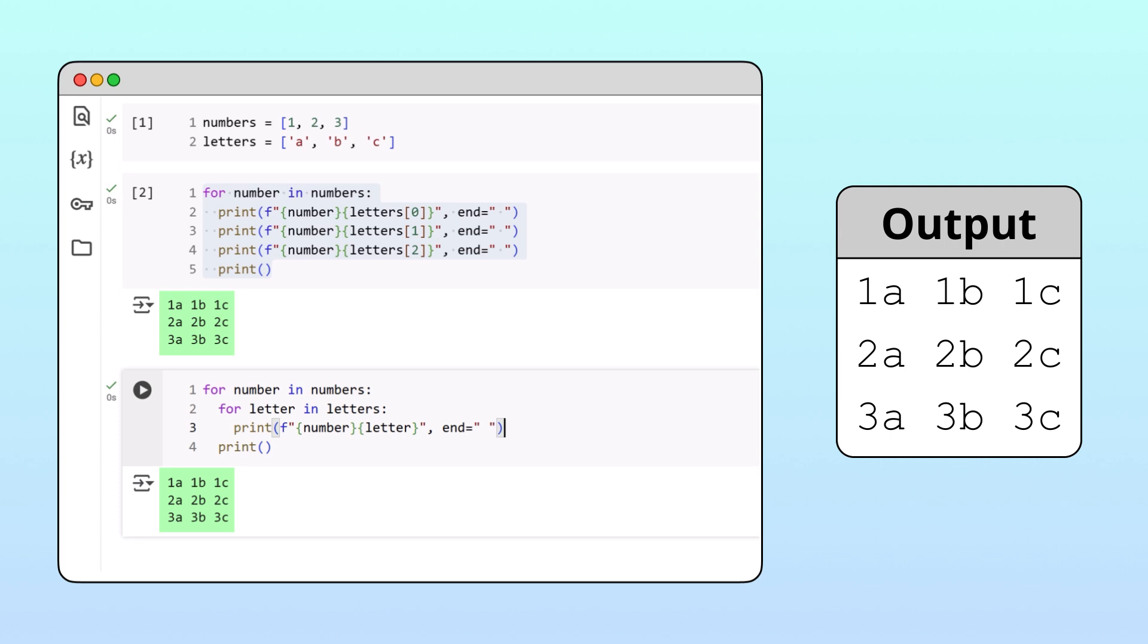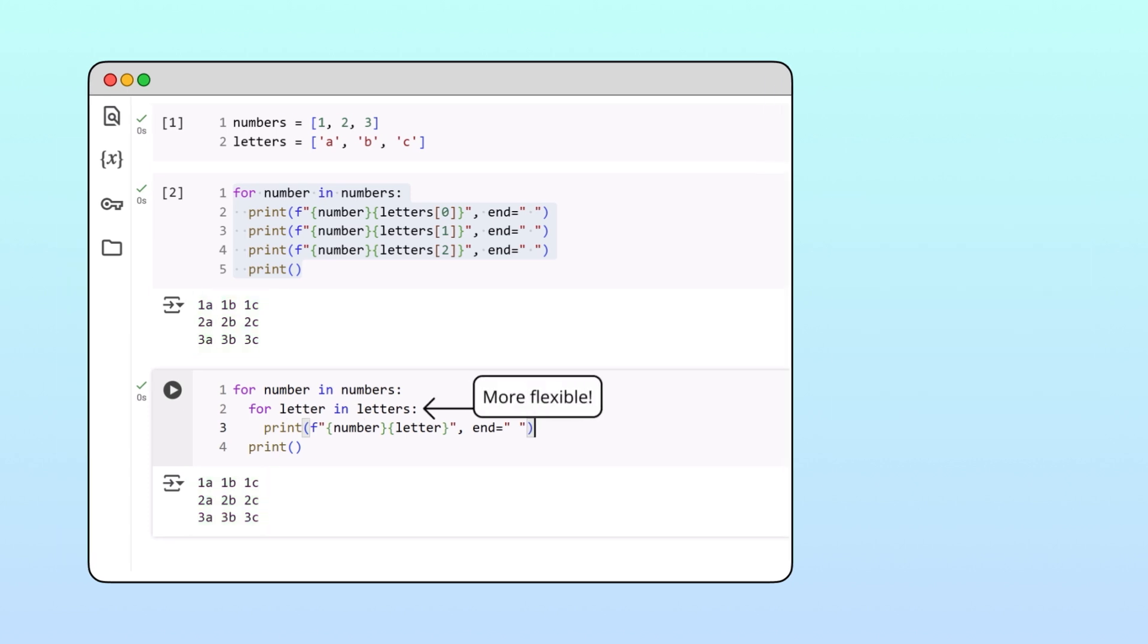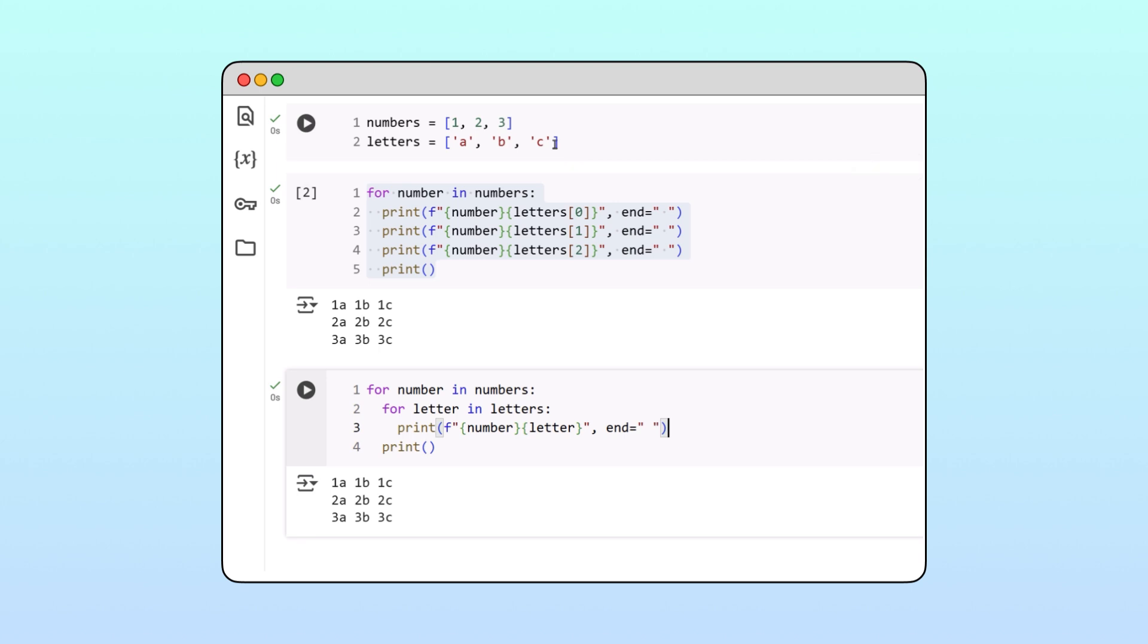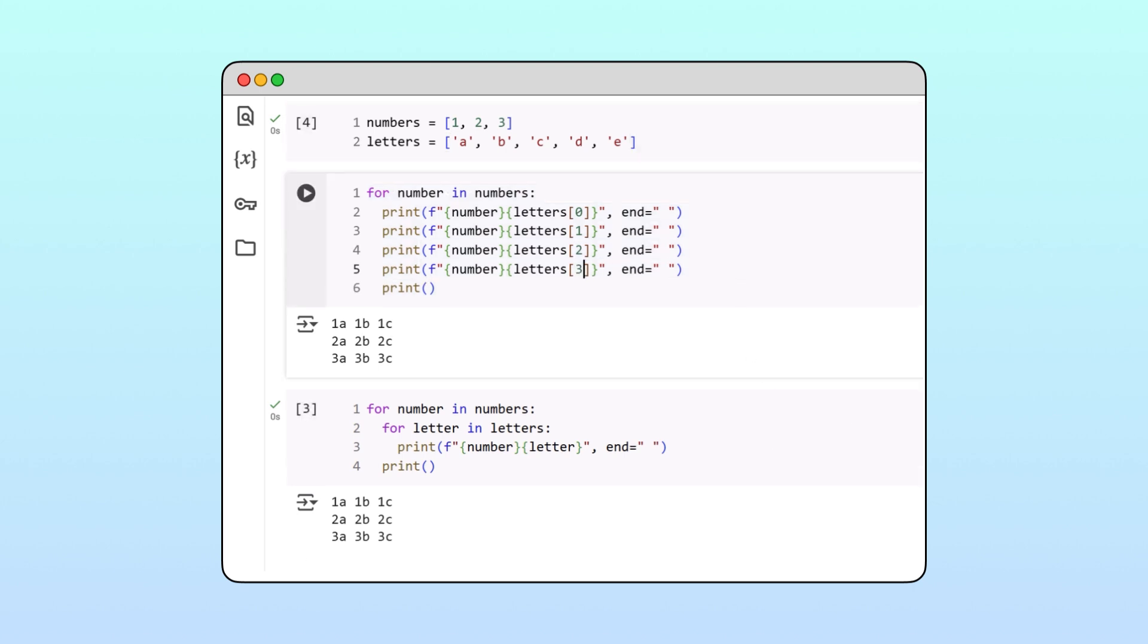But our new approach with nested loops is more flexible. For example, suppose we want to create more columns by adding a few more letters to our letters list. When we don't use a nested loop, we need to add more print statements manually to create the extra columns.